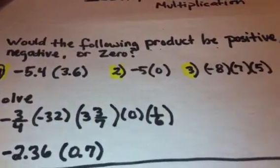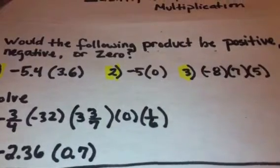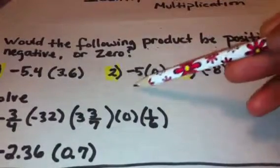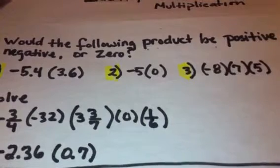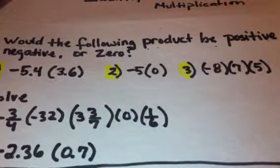Let's take a look at number two. Number two is simply negative 5 times zero. And as we know when we're dealing with zero, that any number times zero is going to be zero.